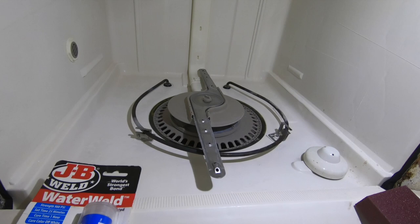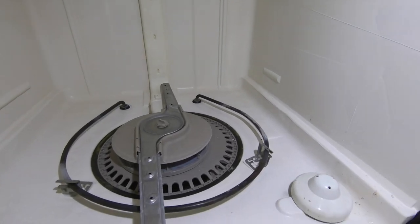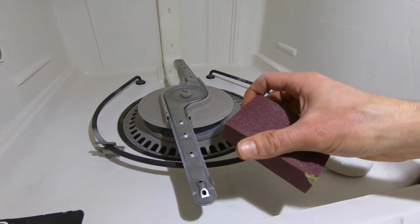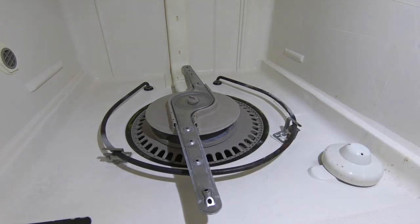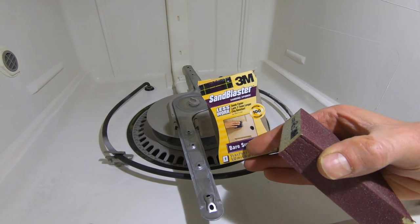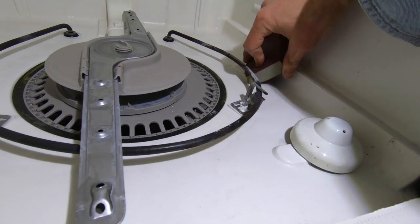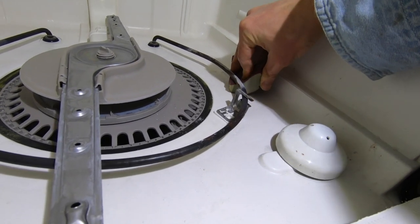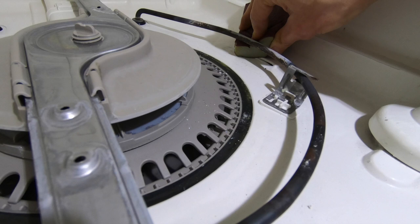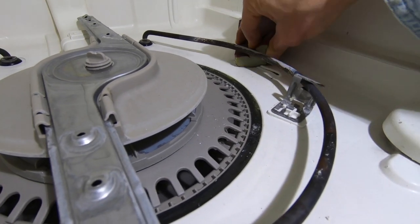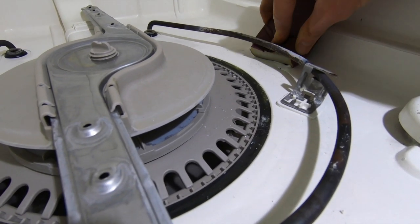So before we do that, I'm gonna need to prep the surface with a waterproof sanding sponge, this 3M product. Just take it to the tub and scratch up the surface really good. That'll allow the water weld stuff to adhere better to the smooth surface.